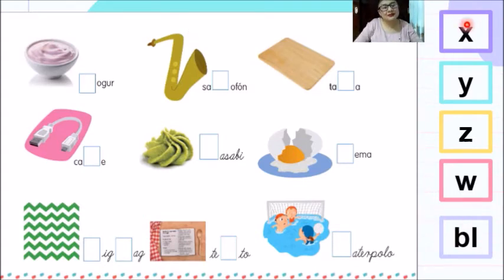De este lado les puse unas letras. Esas letras son con las que vamos a estar trabajando. ¿Recuerdan que ya se las presenté? Tenemos a la letra X, a la letra Y, a la letra Z, a la letra W y a la letra B. Ahora, con ellas vamos a estar creando o completando, más bien dicho, el nombre de los objetos.